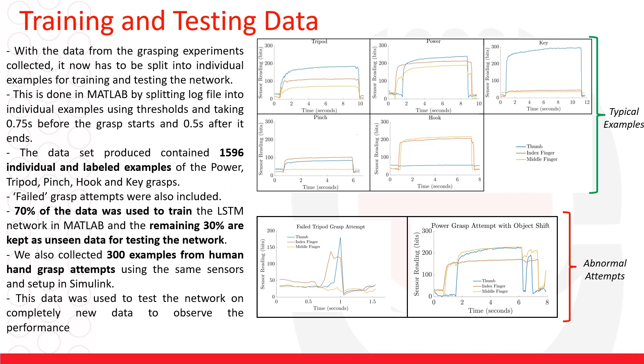We also collected 300 examples from a human hand to test the trained network on completely new data and we also included failed examples which we expect will occur during daily use with the prosthetic hand.